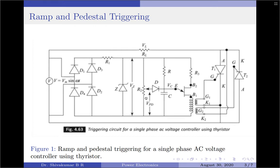To better understand the pedestal triggering circuit, we consider two cases. First, when the pedestal voltage is low: since Vpd across capacitor C is low, the charging time of the capacitor will be long, as the capacitor charges through R. Therefore, the firing angle α will be high and the average output voltage will be low.